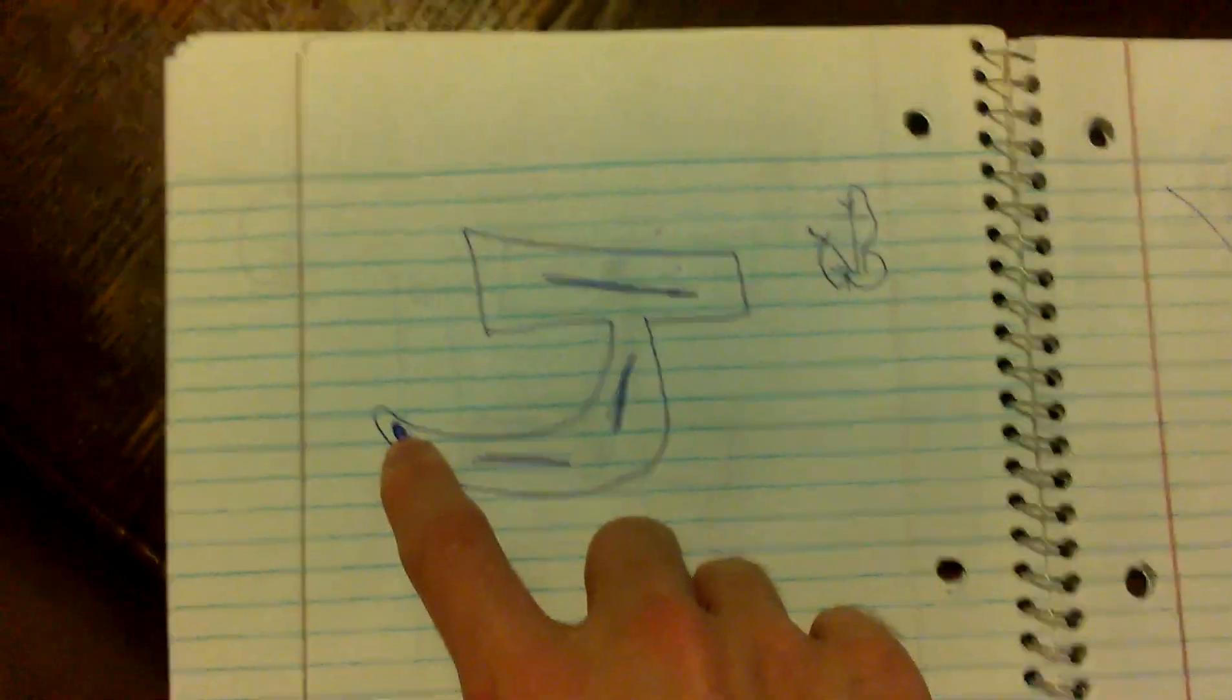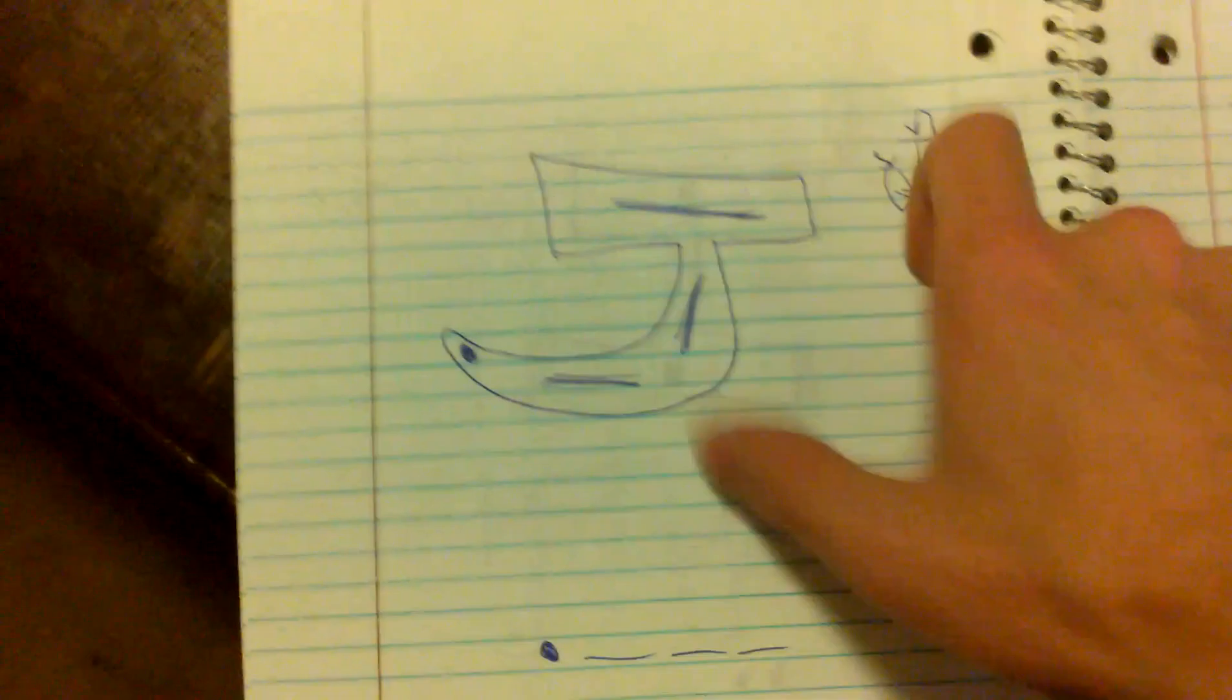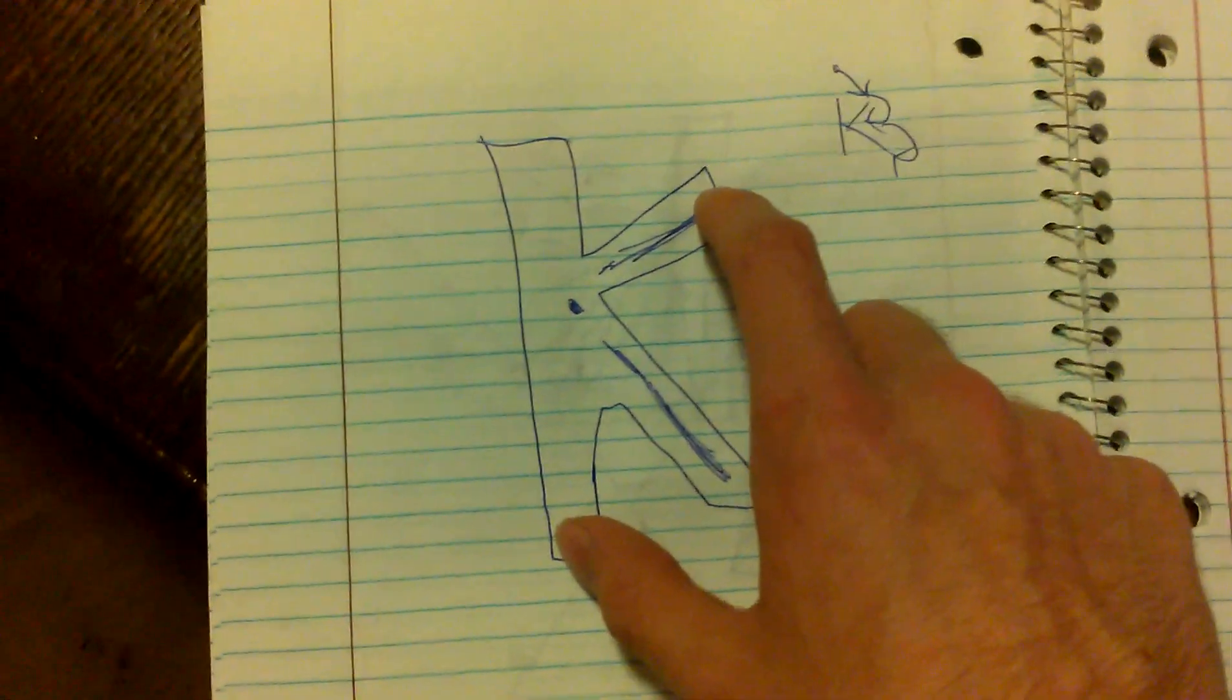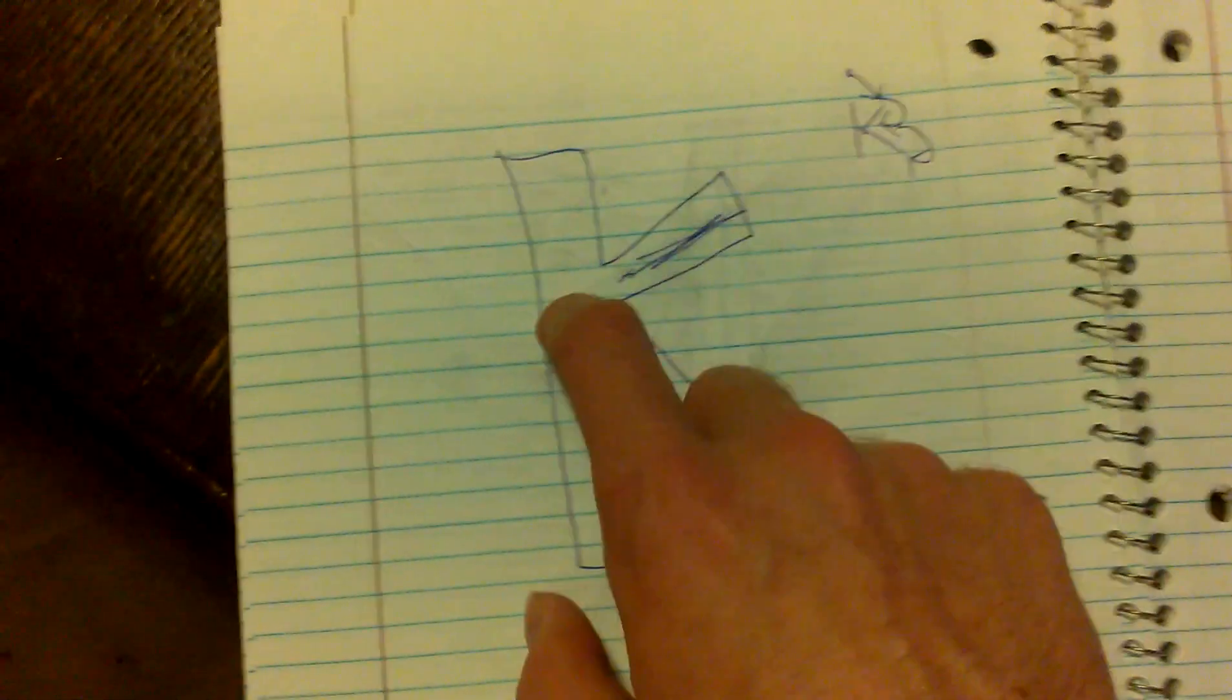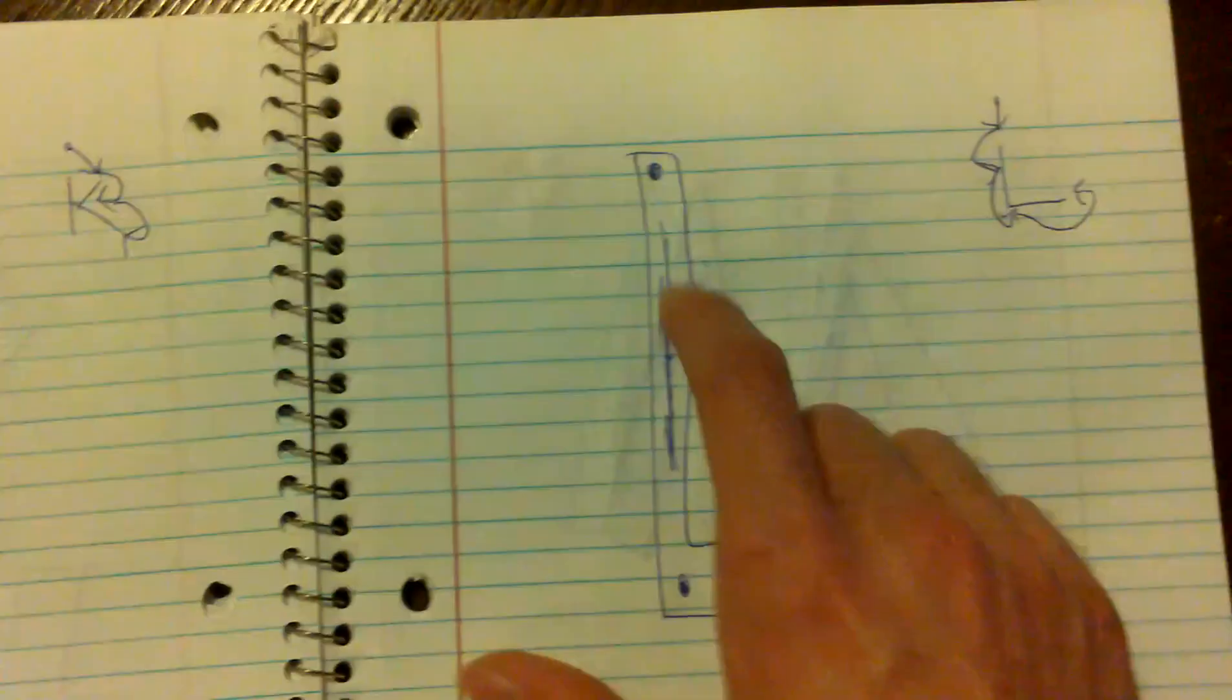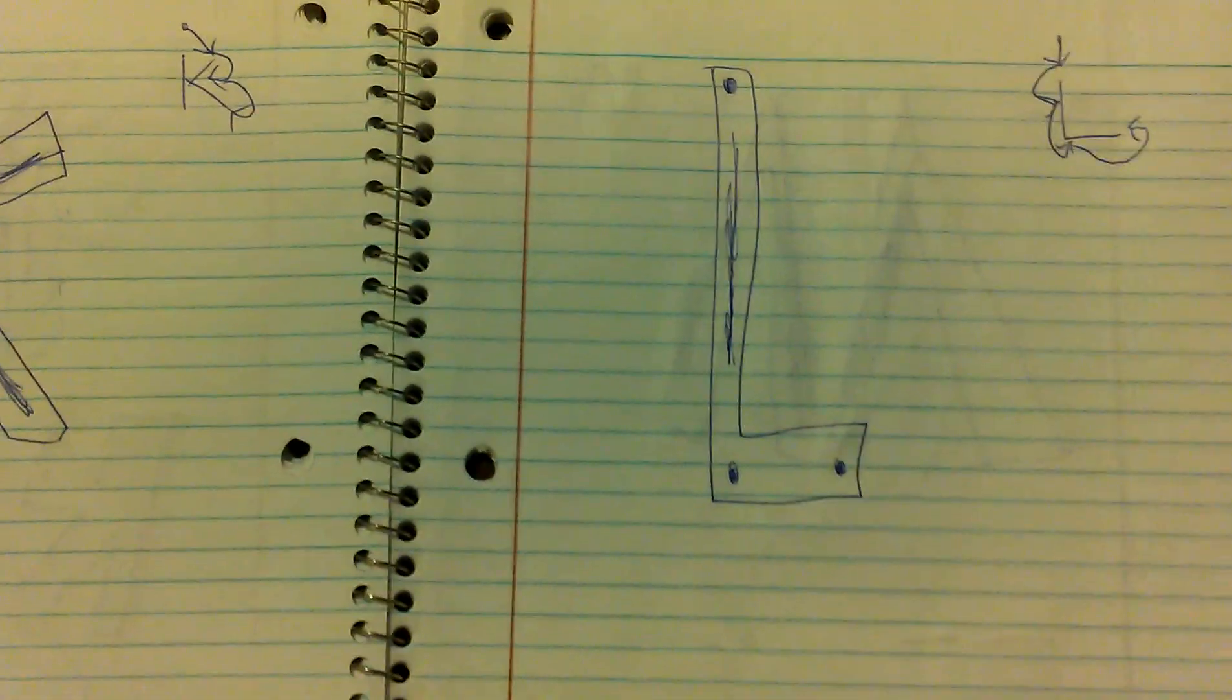A J starts right here for some reason, it goes dot dash dash dash. A K goes dash dot dash, this is an up to down movement. And L is dot dash dot dot, that's also up to down.